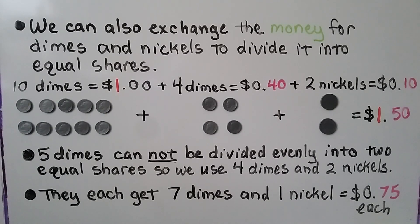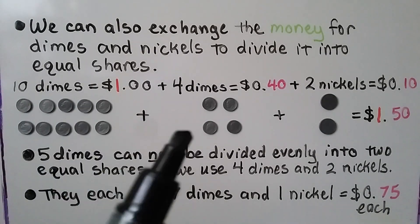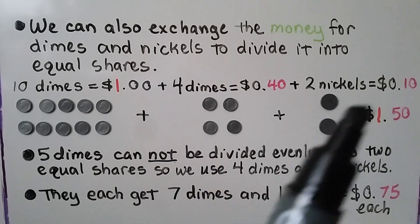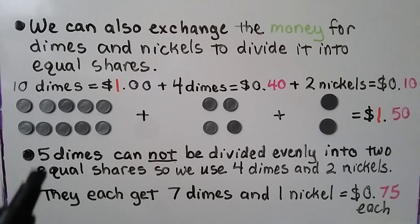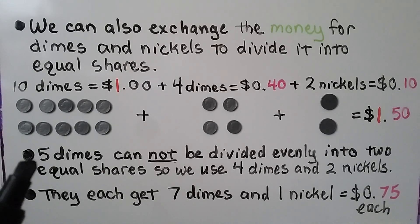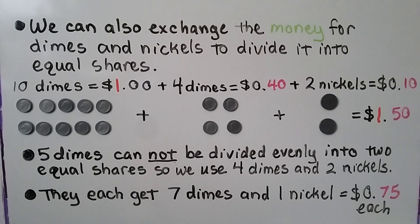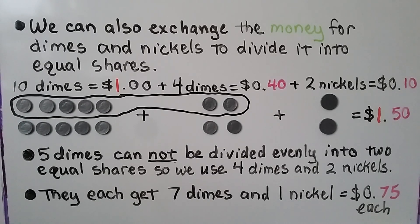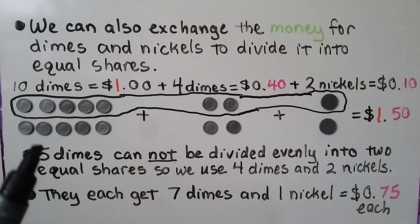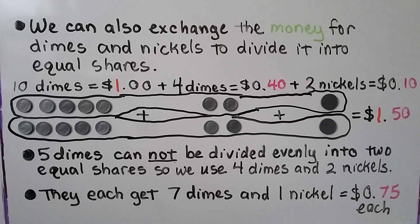We can also exchange the money for dimes and nickels to divide it into equal shares. Ten dimes equal a dollar, four dimes equal forty cents, and two nickels equal ten cents. Five dimes cannot be divided evenly into two equal shares, so we use four dimes and two nickels. We give Emma five dimes, two dimes, and one nickel, and Tala gets five dimes, two dimes, and one nickel. They'll each get seven dimes and one nickel — seventy-five cents.